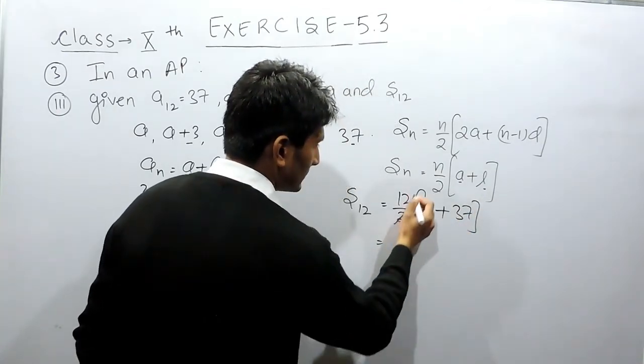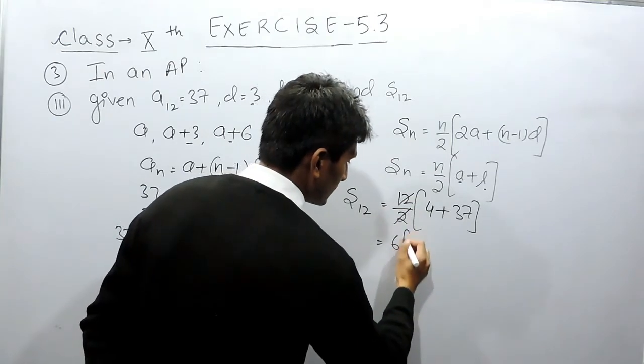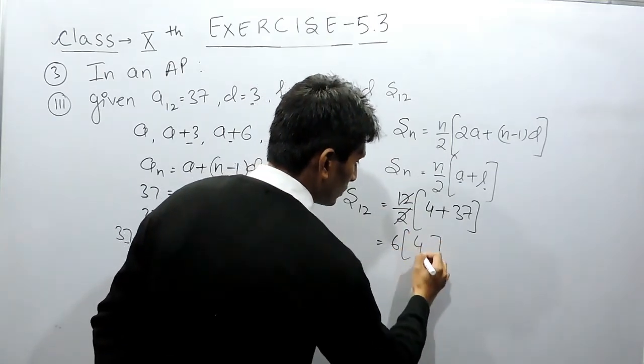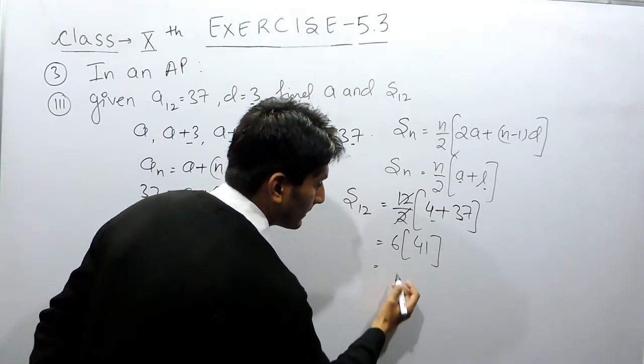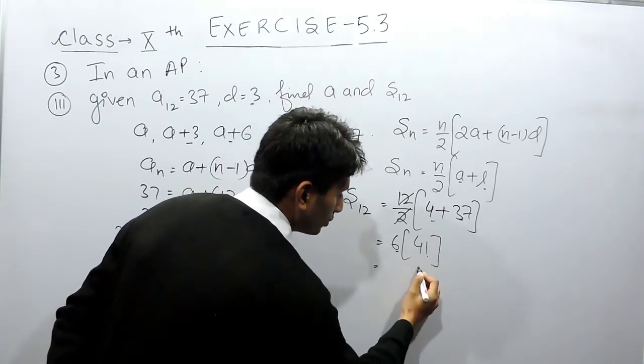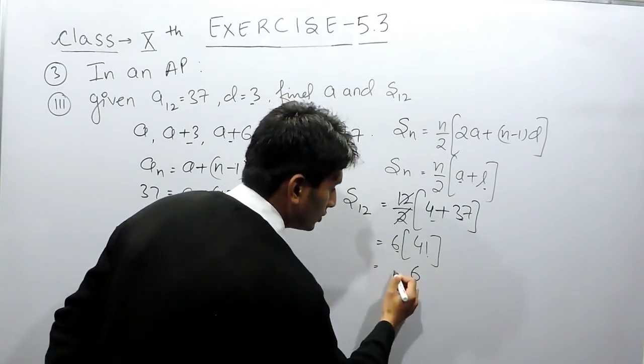So I can cancel this, 6 times this will be 6 into this will be equal to 41. 4 plus 37 and 41 multiplied by 6 will be equal to 6 into 1 is 6 and 6 into 4 will be equal to 24.